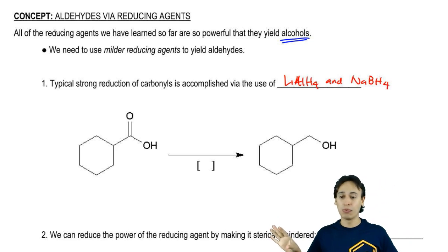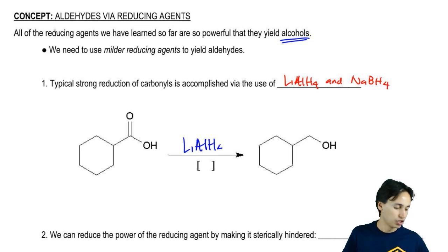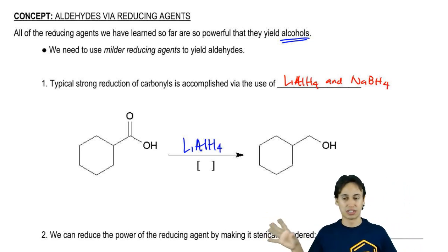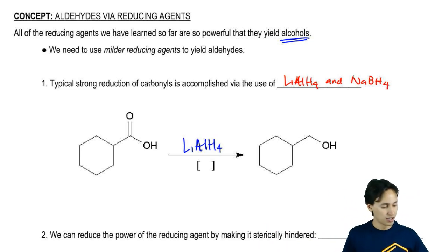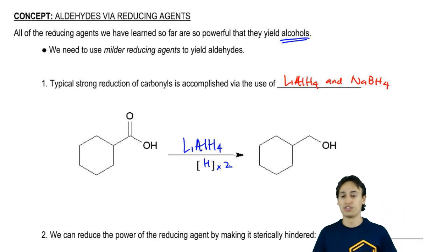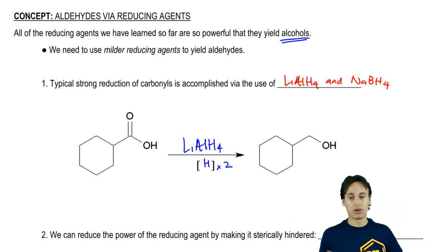In this specific example, we would actually want to use LAH, or lithium aluminum hydride. You might remember that this one is the one that works better with carboxylic acids. What winds up happening is that it adds two equivalents of hydrogen to the carbonyl to get an alcohol.